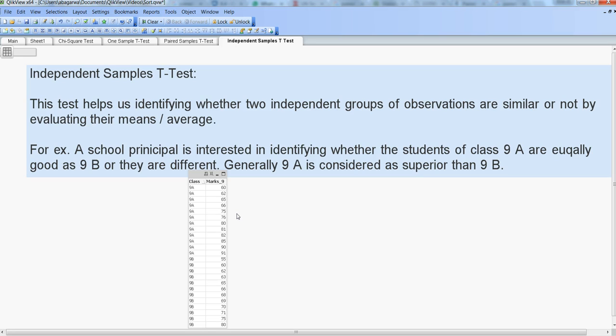So here we have framed two hypotheses. The null hypothesis is that there is no change between 9A and 9B. The alternative hypothesis is that there is a difference between the students of 9A and 9B by looking at their marks which they have recently got.